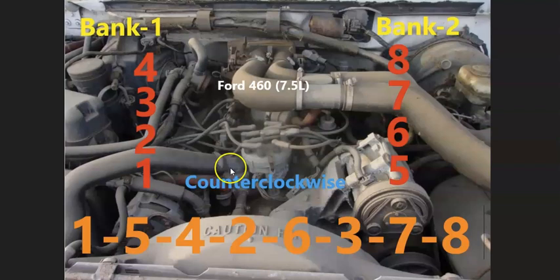The firing order for the Ford 460 engine is going to be 1-5-4-2-6-3-7-8. And the distributor rotation is going to be counterclockwise.